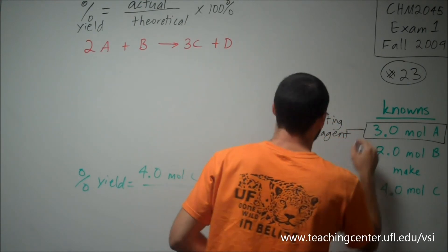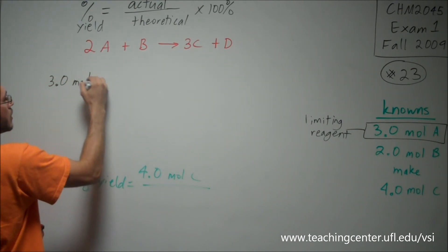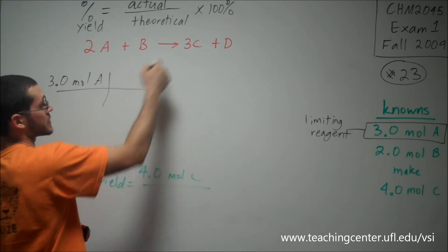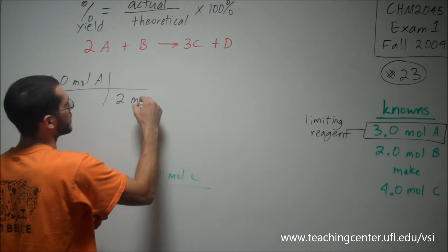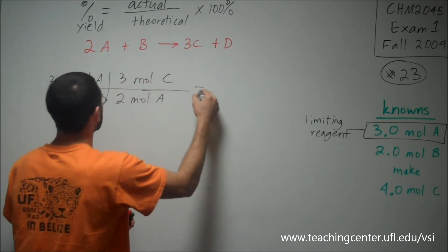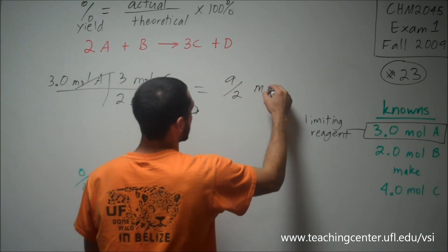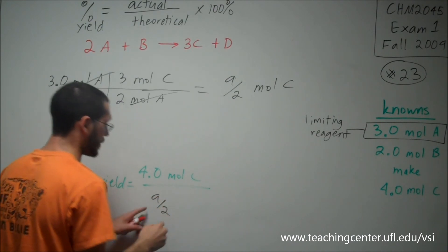Okay. So we're going to start with our A, 3.0 moles of A. Now we know that that's going to run out first. And we're going to convert to C. How much could we theoretically make? So for every 2 moles of A, I have 3 moles of C. Moles A cancel. I'm left with 9/2 moles of C. That amount is going to go down on the bottom here in the theoretical spot.